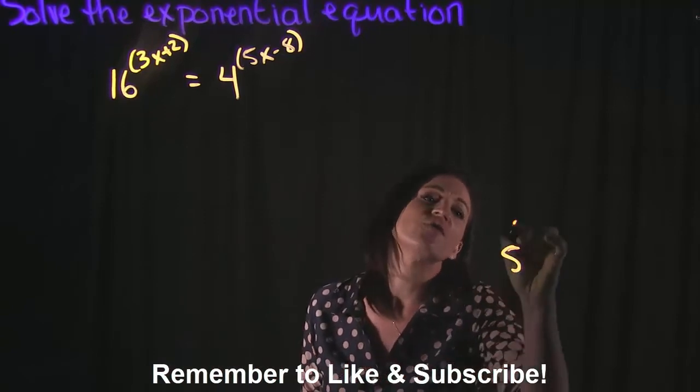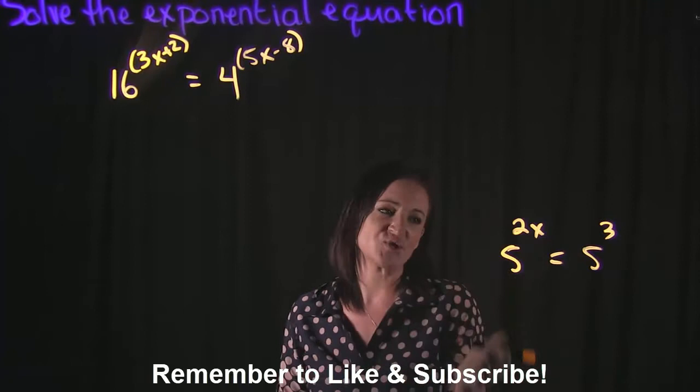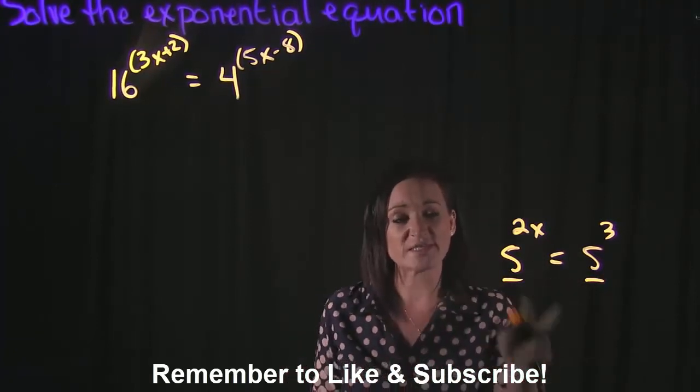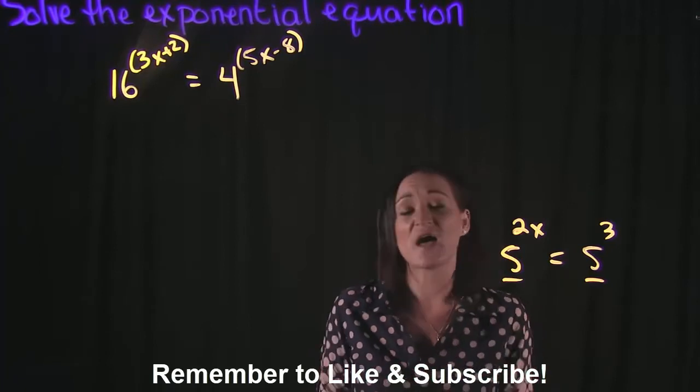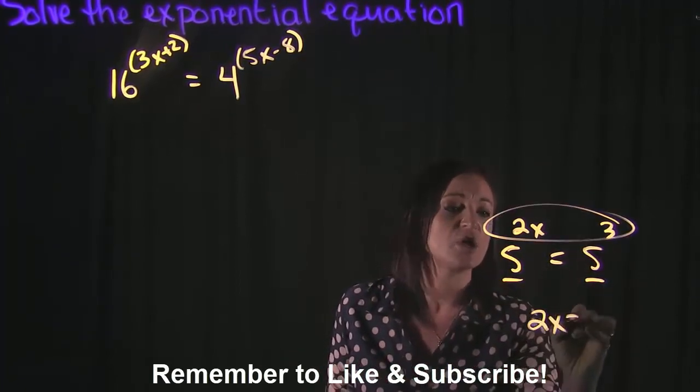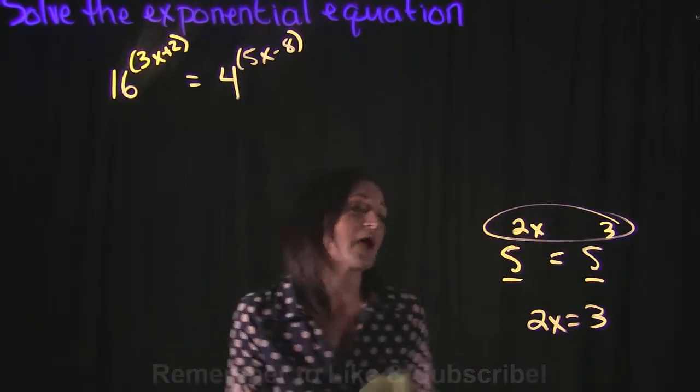For example, if I had something like 5 to the 2x equals 5 cubed, because our bases are the same—5 is the same as 5—the rule says that I can just set the exponents equal to each other: 2x equals 3, and solve that.